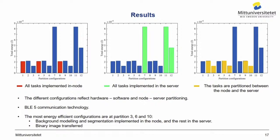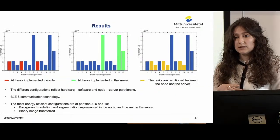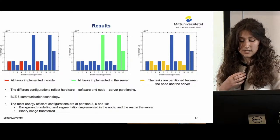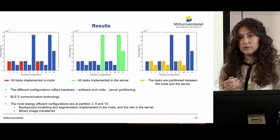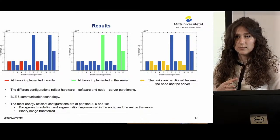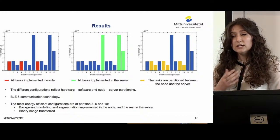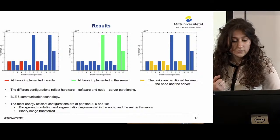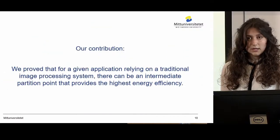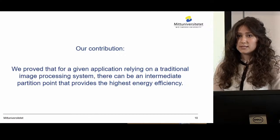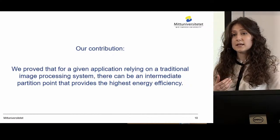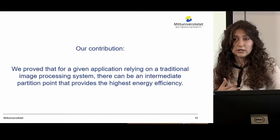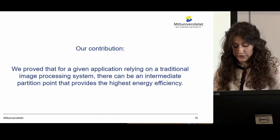In partitions 3, 6, and 10, we obtain the optimal overall energy consumption. These configurations rely on background modeling, subtraction, and segmentation implemented in the smart sensor node while the remaining tasks are implemented in the server — reducing data volume from a grayscale image with 8 bits per pixel down to 1 bit per pixel of a binary image. In conclusion, we proved that for a given application relying on traditional image processing, there can be an intermediate partition point that provides the highest energy efficiency.